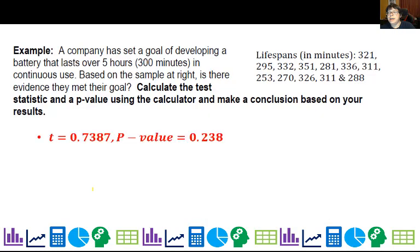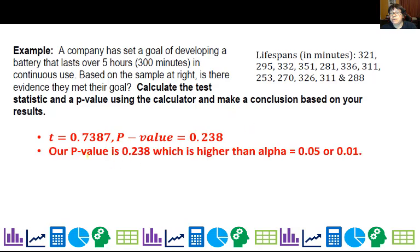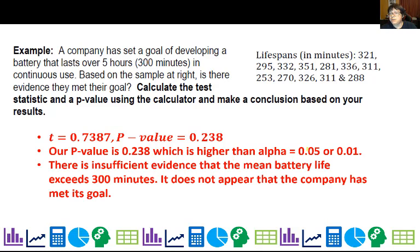All right, let's go ahead, and we're going to look at doing something on the calculator. And basically, I went ahead and I put all these values in the calculator and list one, and ran a t-test. All right, and it spits these values out to me. And then, looking at the p-value, I can conclude that our p-value, 0.238, is actually pretty high, and that means we fail to reject the null. There's not enough evidence the mean battery life exceeds 300 minutes. It does not appear that the company has met its goal.